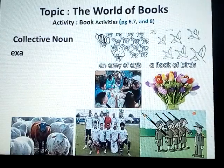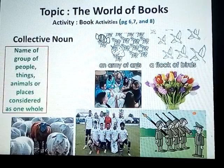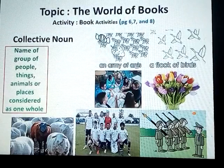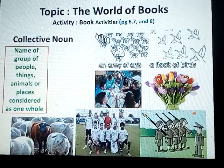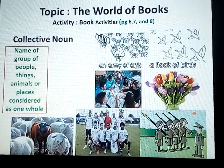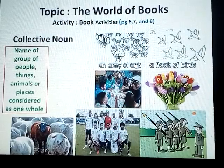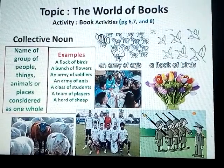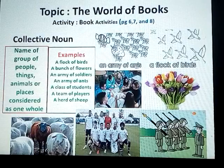When we give a name to a group of things, that becomes a collective noun. A collective noun is the name of a group of people, things, animals, or places considered as one whole. When we consider a group as one whole and give it a particular name, we call it a collective noun. Examples: a flock of birds, a bunch of flowers, an army of soldiers, an army of ants, a class of students, a team of players, a herd of sheep.